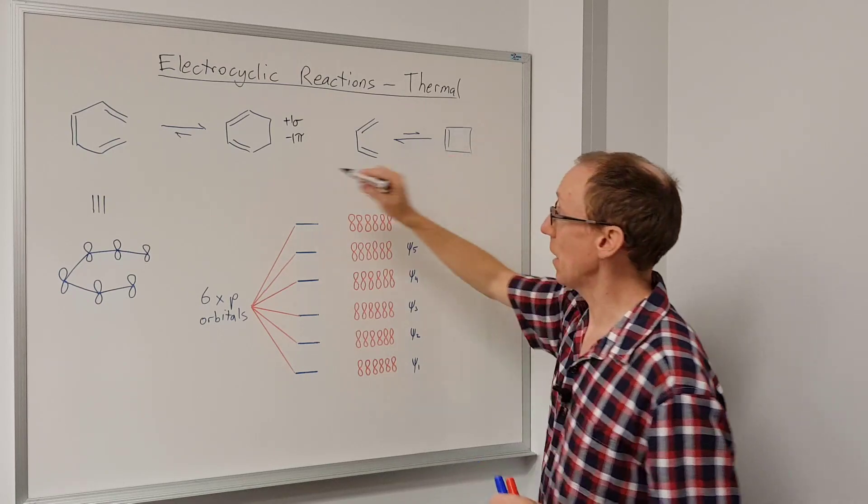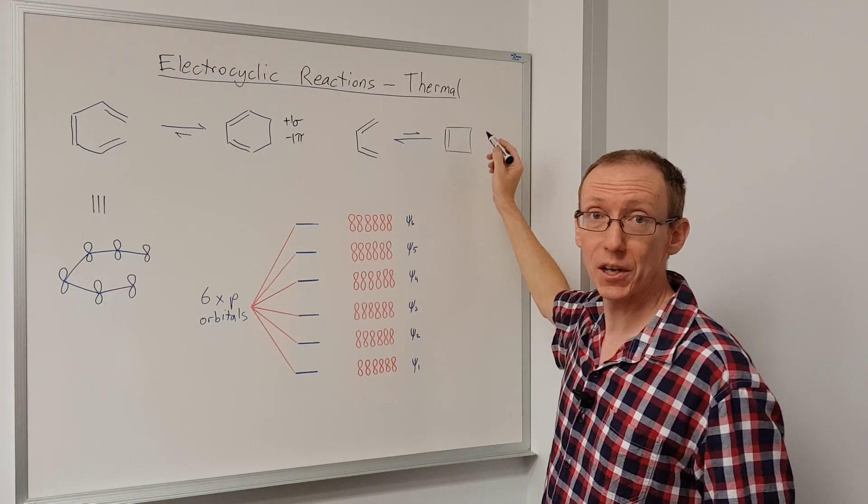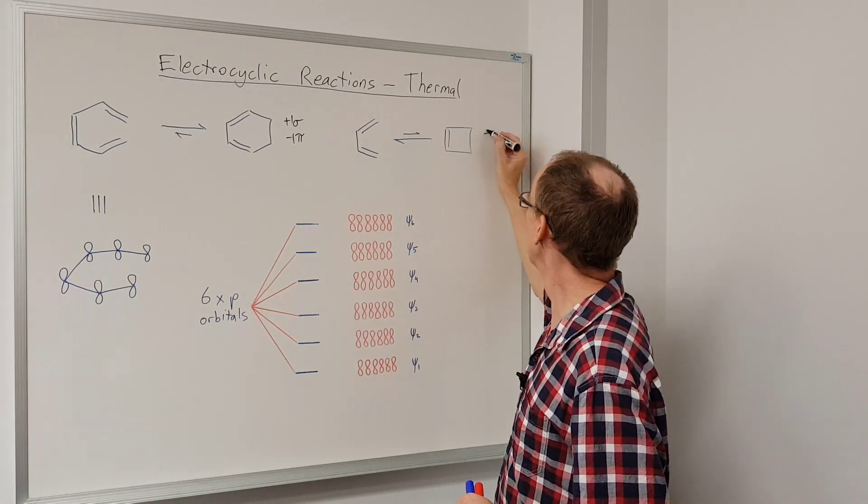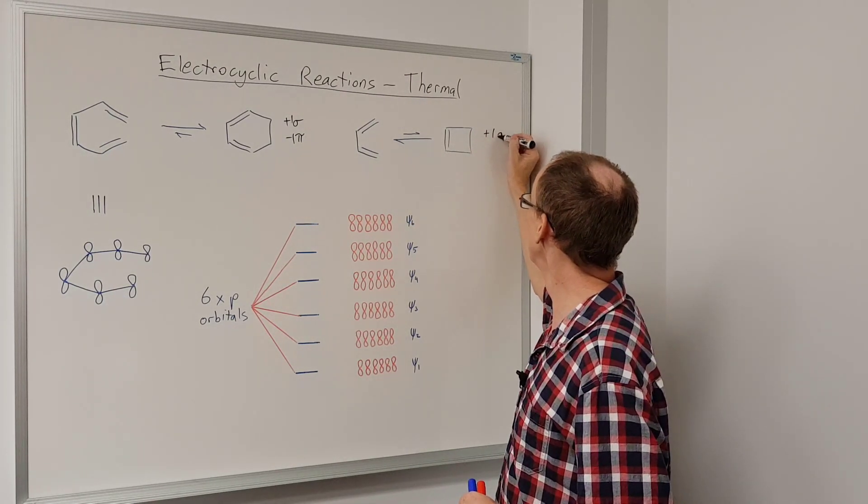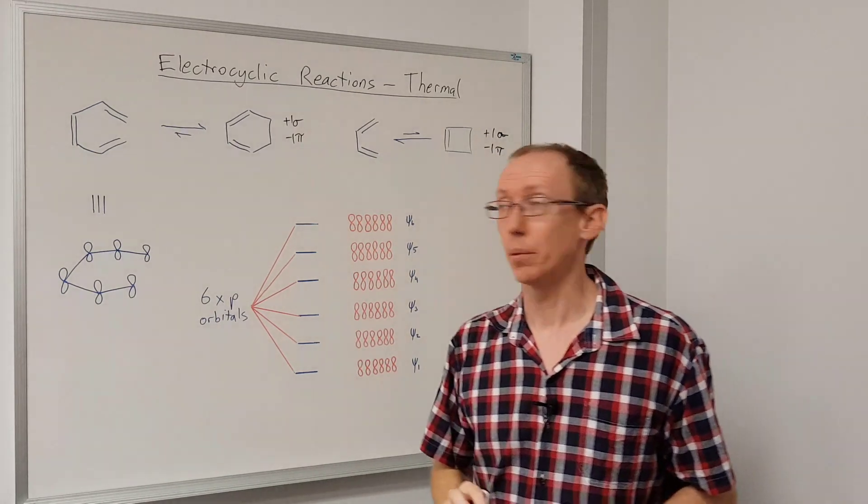This can happen with different ring sizes. Here we've got formation of a six-membered ring, here we've got formation of a four-membered ring, but in both cases we just lose one pi bond and gain one sigma bond.